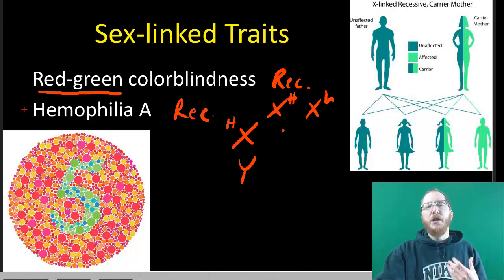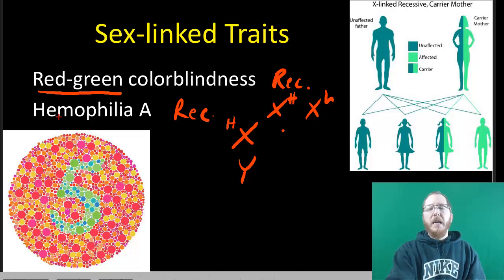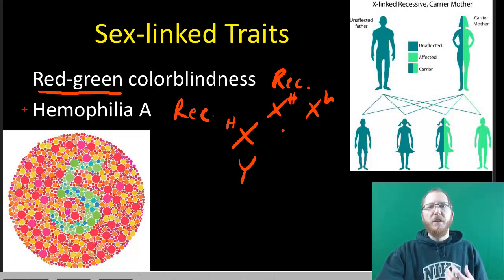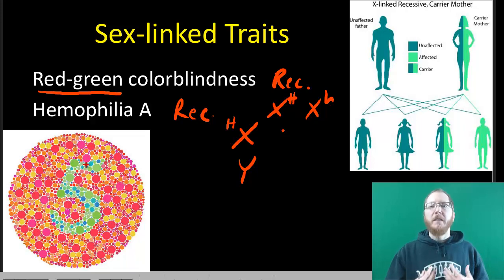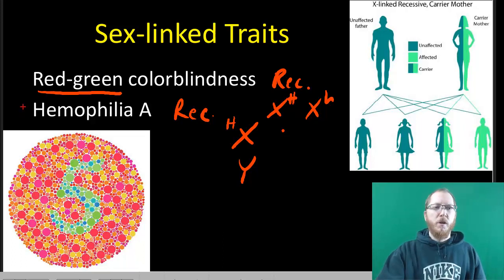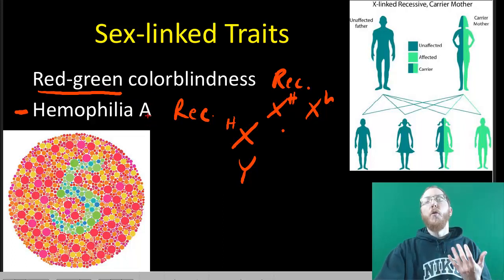Hemophilia is when you have issues clotting your blood, so you really have to watch out — with bruising or cuts, people can bleed to death because they won't clot properly. This became a big issue in the 1980s because hemophiliacs often need blood transfusions, and back then transfusions were sometimes contaminated with HIV. A fair number of hemophiliacs ended up contracting HIV and later AIDS as it destroyed their immune system. Hemophilia is also a recessive condition on the X chromosome, so it will more than likely affect males.